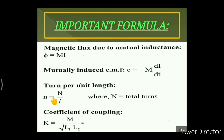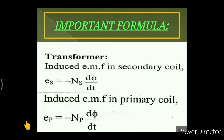The turns per unit length is given as n = N/l, where N is the total number of turns. The coefficient of coupling K is a measure of the portion of flux that reaches coil 2 from coil 1. For two coils with self inductances L1 and L2, the coupling is given as K = M/√(L1·L2).